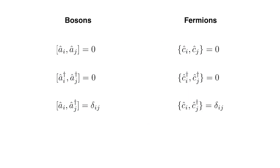To wrap up, let's compare the bosonic creation and annihilation operators with the corresponding fermionic operators discussed in the companion video. The creation and annihilation operators for bosons obey commutation relations, which are a direct consequence of the symmetric nature of bosonic states. By contrast, fermionic creation and annihilation operators obey anti-commutation relations, represented by curly brackets, which are a consequence of the anti-symmetric nature of fermionic states. The commutation algebra of creation and annihilation operators captures all the subtleties associated with the symmetry of bosonic states, forming the basis of the description of bosons in second quantization.